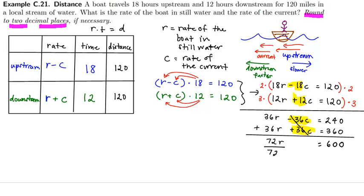Dividing each side by 72, r is equal to 25 thirds, or otherwise if I round to two decimal places as it states in the directions, 8.33.